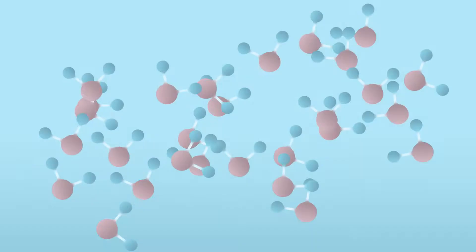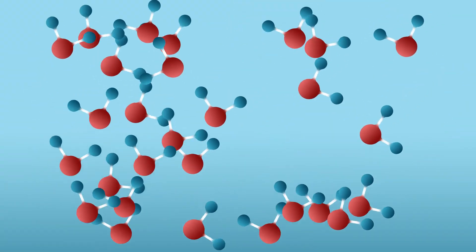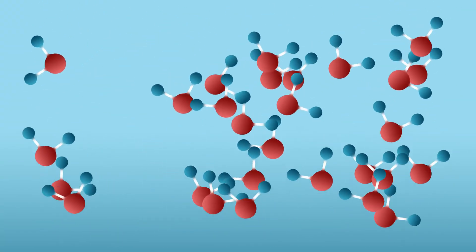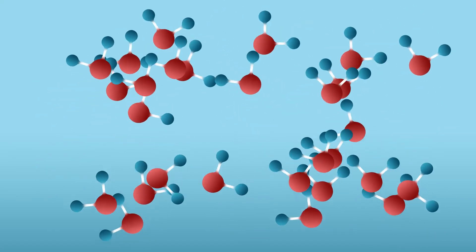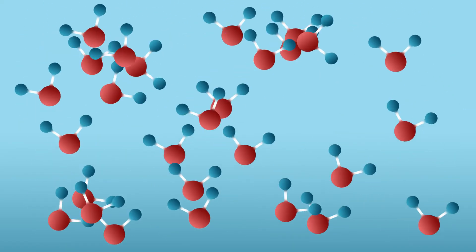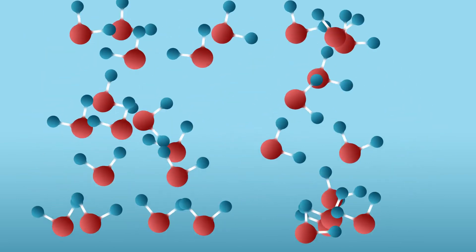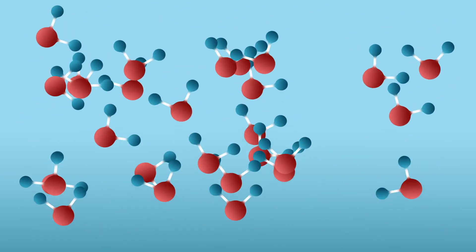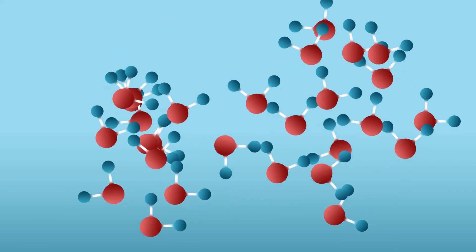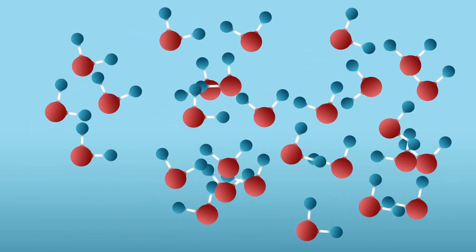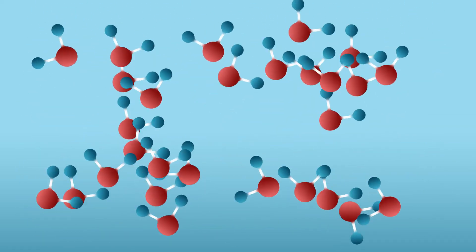Latent heat is a form of thermal energy that is hidden or latent within the molecules of a substance. When energy in the form of heat is added to a substance, the molecules gain kinetic energy and move faster. This increased motion causes the molecules to vibrate more and eventually overcome the forces that hold them together in their current state.